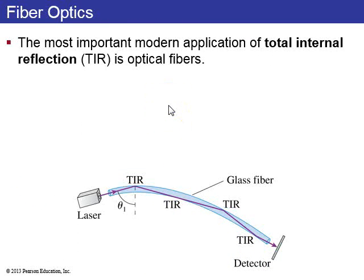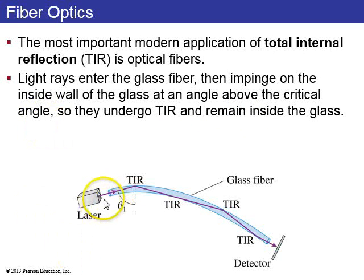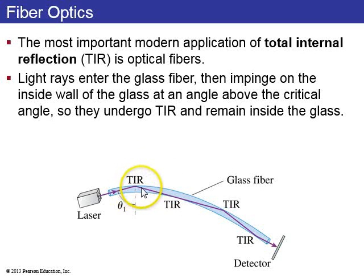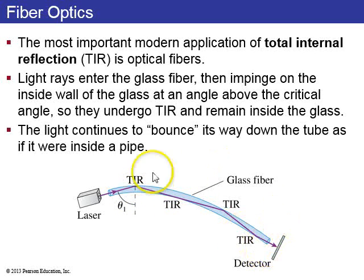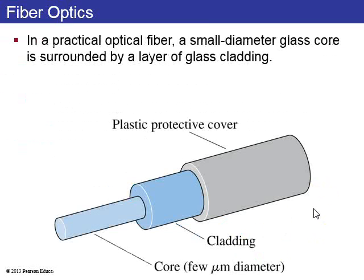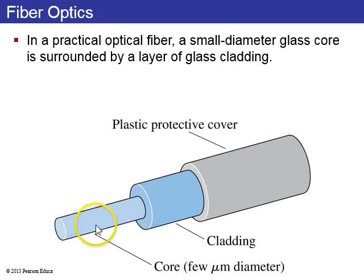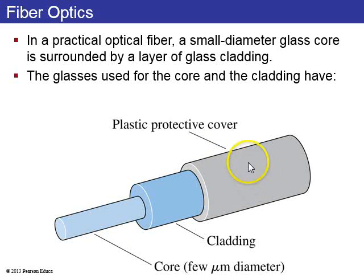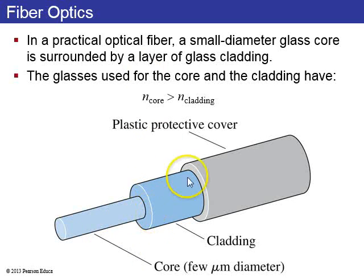The most important modern application of total internal reflection is optical fibers. A laser shines light into a glass fiber, and when it hits the inside wall of the glass where there's air or a lower index material outside, all the light is reflected and bounces its way down the tube like a light pipe. In practical optical fiber used in communications, you have a small glass core surrounded by cladding with a lower index of refraction, then a plastic protective cover. You must have n_core greater than n_cladding for total internal reflection to occur inside the core.